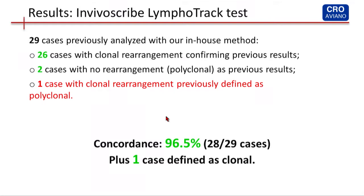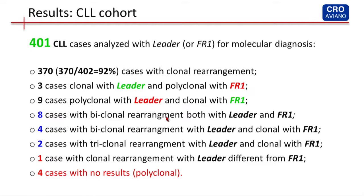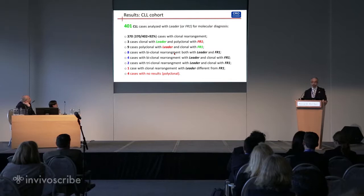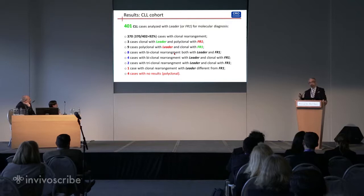If you have to use this parameter in the context of first-line therapy, this improvement could be very important. Starting from the middle of 2015, we analyzed 401 CLL cases with the leader strategy or FR1 strategy. The results seem quite complex, but I will go into detail for each case. We have 370 cases with clonal rearrangement — canonical cases — three cases clonal with the leader PCR but polyclonal with the FR1 strategy, nine cases polyclonal with the leader but clonal with the FR1 strategy, and eight cases with biclonal rearrangement, both with the leader and FR1.